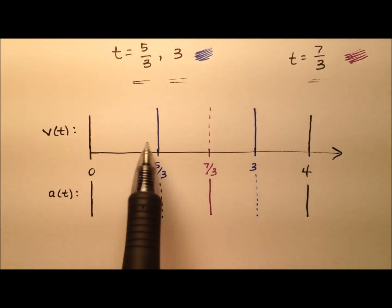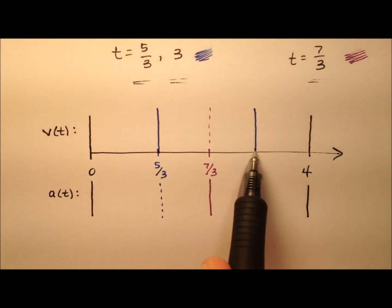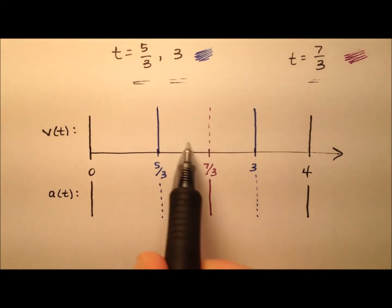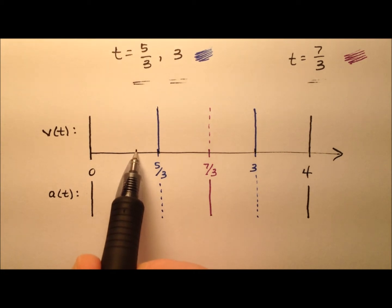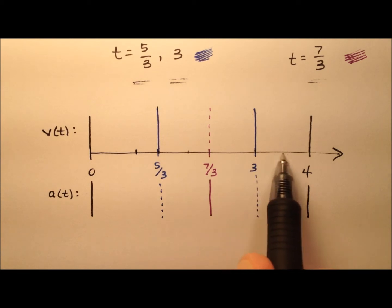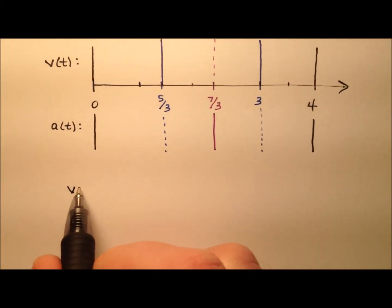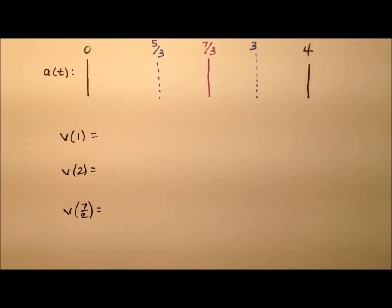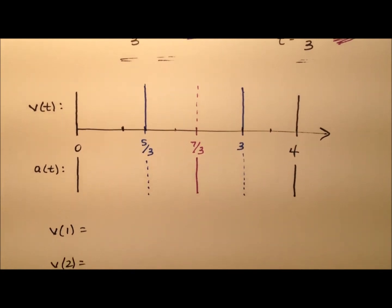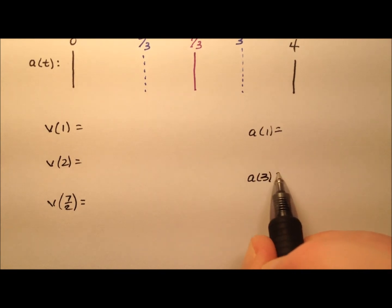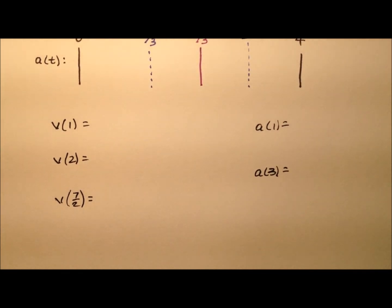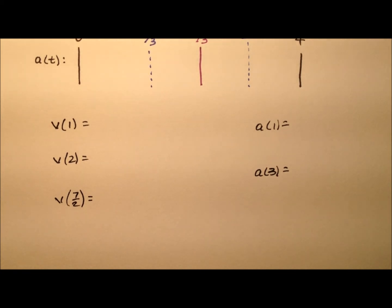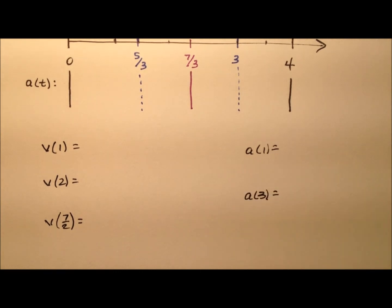Now, the velocity has critical points at 5 thirds and 3 where it equals zero. We need to pick some test points in between: let's use t equals 1, t equals 2, and t equals 7 halves for velocity, and t equals 1 and t equals 3 for acceleration. We only care about the sign — positive or negative — not the actual value, since the sign tells us whether the particle is moving right or left, and whether acceleration is pushing right or left.